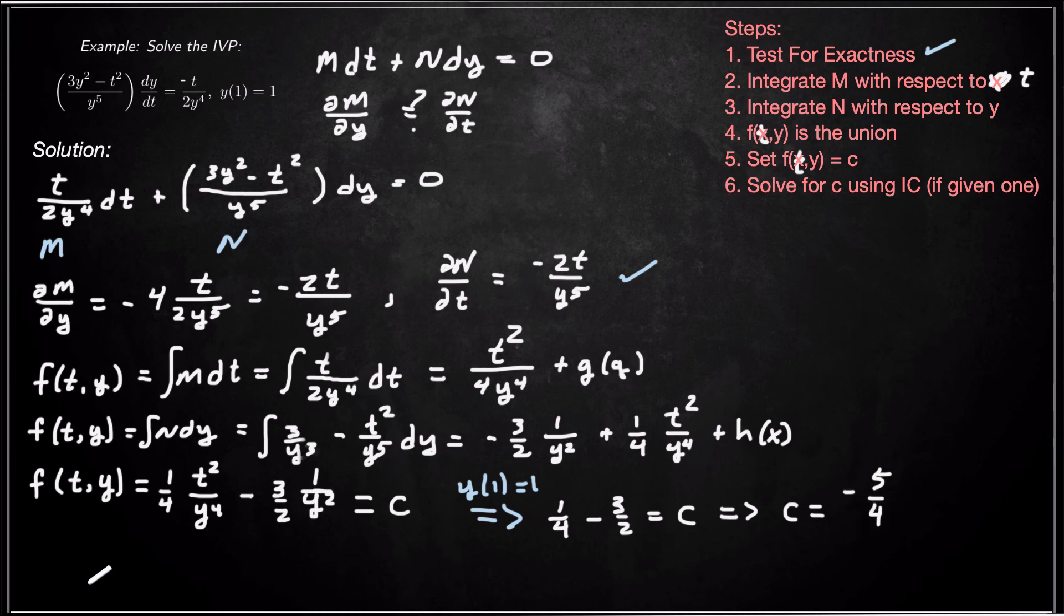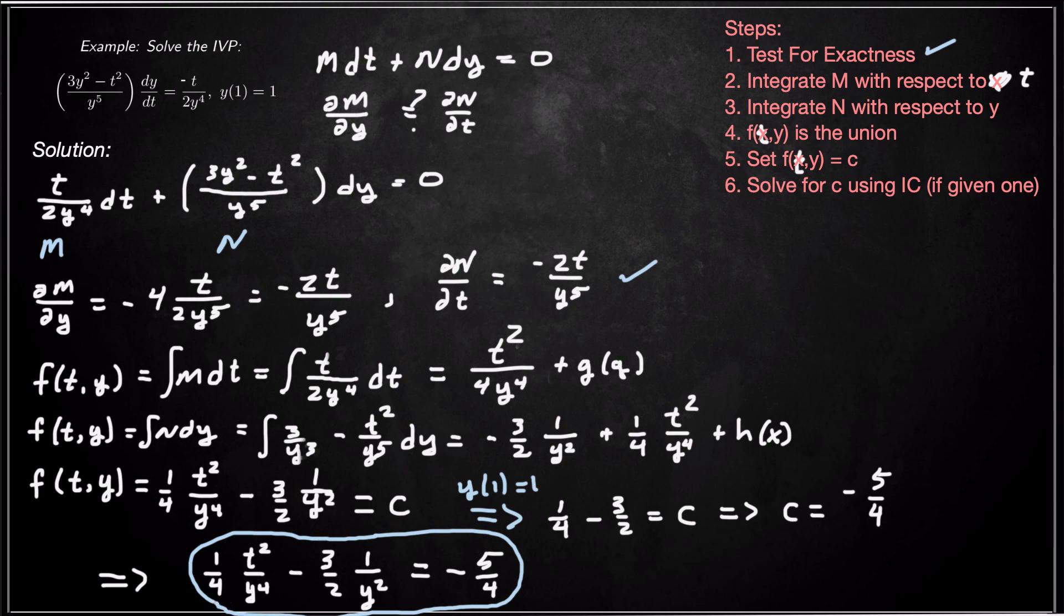So then our unique solution is going to be 1/4 t²/y⁴ minus 3/2 times 1/y² is equal to -5/4. And that is our final solution. Right there. And so we solved the exact equation, and that's how we do it.